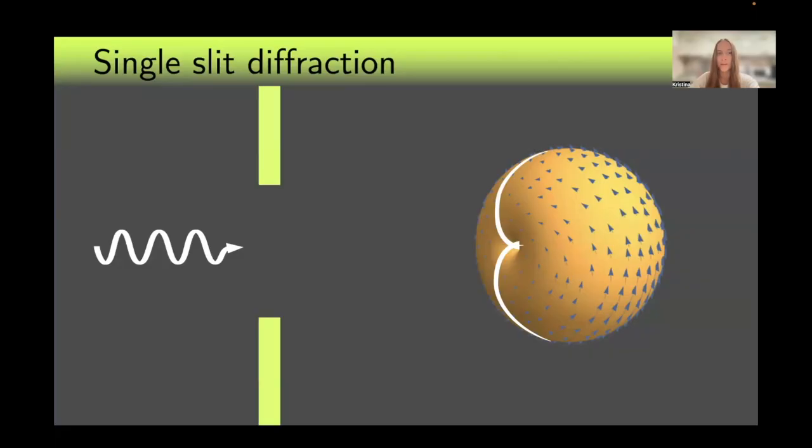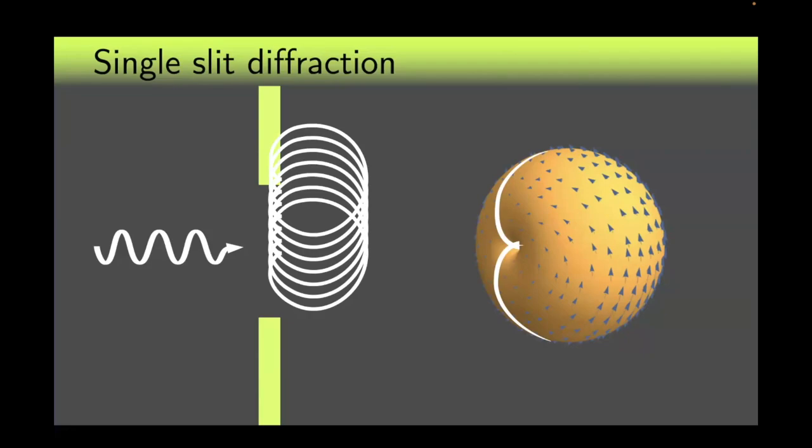Before discussing diffraction on a periodic structure, let us first look at what happens when light passes through a single slit. Let us recall the Huygens-Fresnel principle. It states that every point on a wavefront is a source of secondary spherical waves, the radiation pattern of which takes the shape of a cardioid, as shown here.